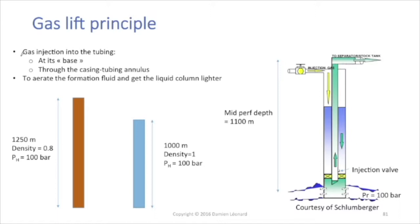The gas lift principle is that we do gas injection through the tubing at its base and through the casing tubing annulus.